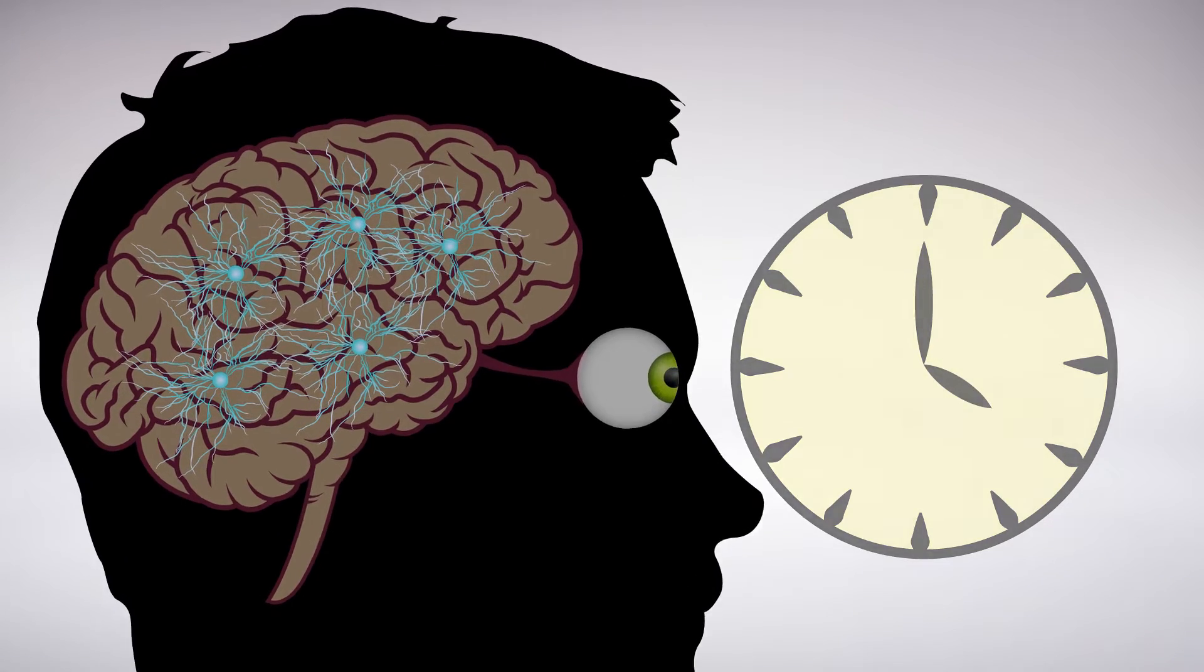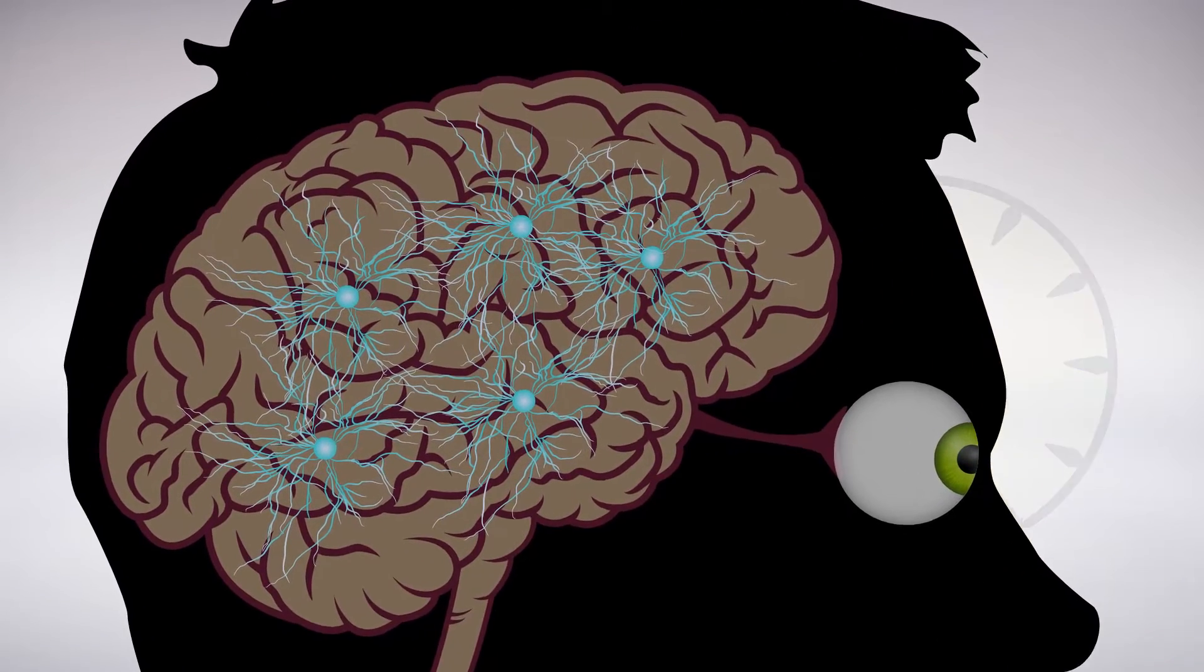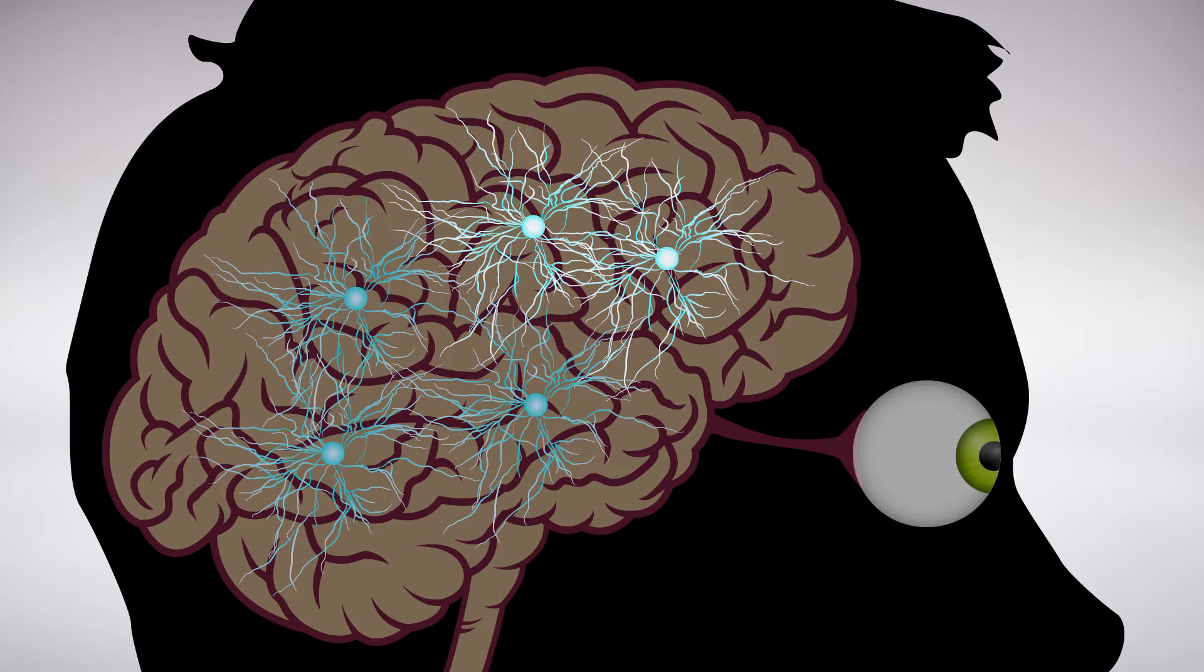But not all cells care about orientation to the same extent. Why are some cells sensitive to minute changes while others are only roughly aware? Researchers have now found an answer and in the process discovered a new type of computational power in neurons.